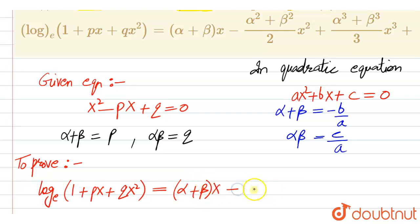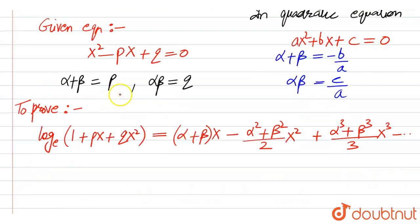Alpha into beta times x minus alpha squared plus beta squared divided by 2, x squared plus alpha cube plus beta cube divided by 3, x cubed. So this is going to continue like this.